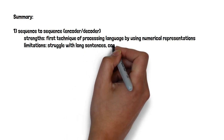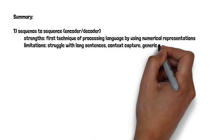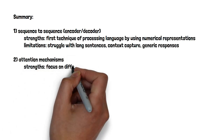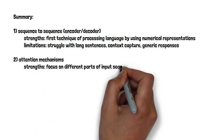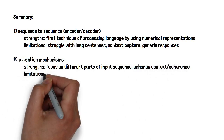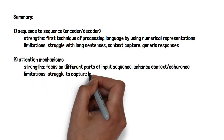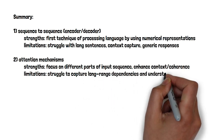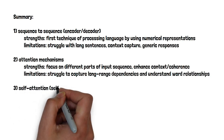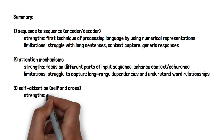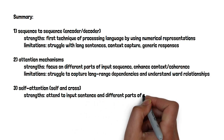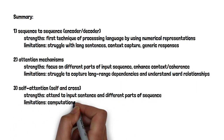To overcome these shortcomings, attention mechanisms were introduced. They allowed the model to focus on different parts of the input sentence, enhancing context and coherence. However, attention models still faced challenges in capturing long-range dependencies and understanding intricate word relationships. To address these challenges, self-attention was introduced, enabling the model to attend not only to the input sequence but also to different parts of the sequence itself — enhancing understanding of word dependencies and improving accuracy.